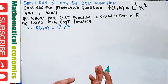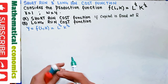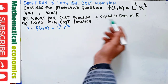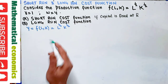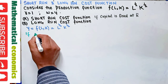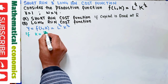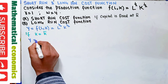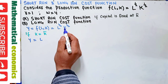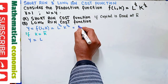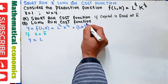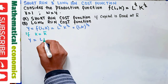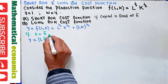In the short run, capital is fixed — we can only change the amount of labor employed because of the constraint that we cannot change capital. So if capital is fixed at K̄, our production function becomes y = L^(1/2) × K̄^(1/2).